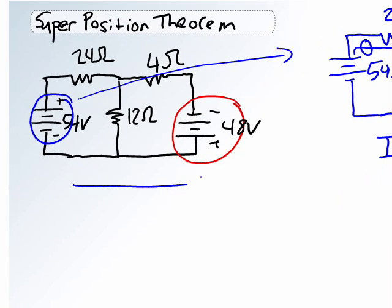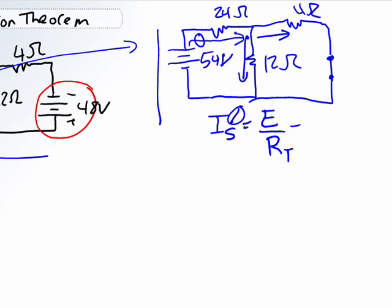Now, watch how I do my notations. My source current prime is equal to the applied voltage by the total resistance. The reason why I say prime is because it is not the total source current as seen by this network over here. Because remember, there's two voltage sources.